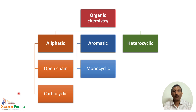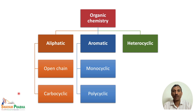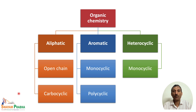Aromatic chemistry is further divided into monocyclic and polycyclic compounds. In the previous session we studied about polyaromatic carbons like naphthalene, anthracene, and phenanthrene — those belong to aromatic chemistry of polycyclic compounds. Now we are going to study about heterocyclic compounds.